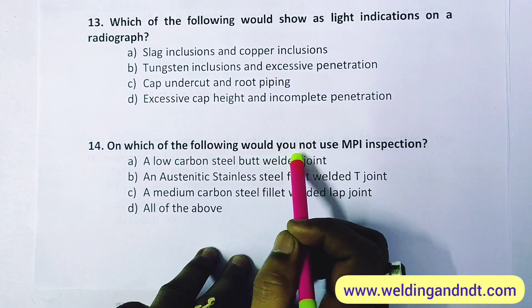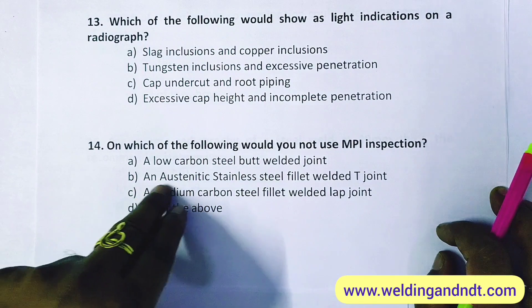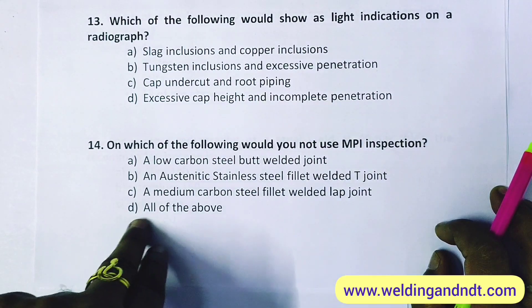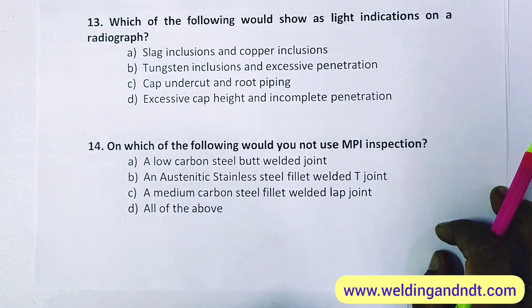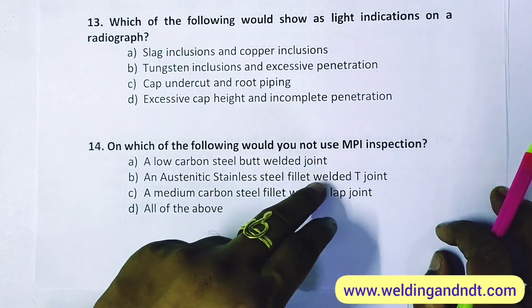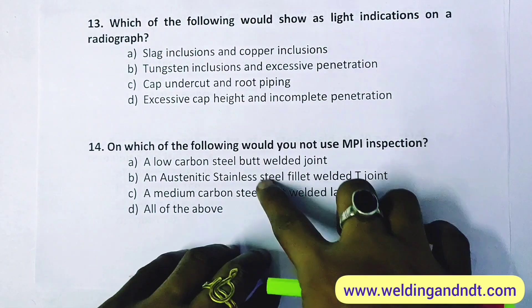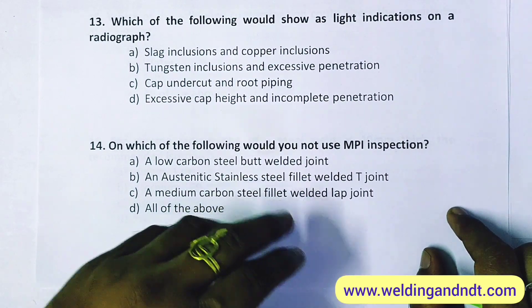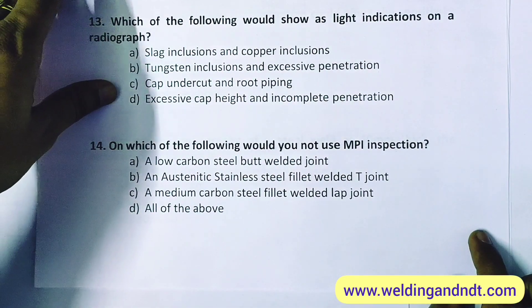Question 14: on which of the following would you not use MPI inspection? Options include a low carbon steel butt weld, an austenitic stainless steel fillet welded T-joint, a medium carbon steel fillet welded lap joint, and all of the above. Whenever austenitic stainless steel is mentioned, it is non-magnetic or non-ferromagnetic, and therefore cannot be checked with MPI. The fillet welded T-joint detail is just a distractor. The answer is B.